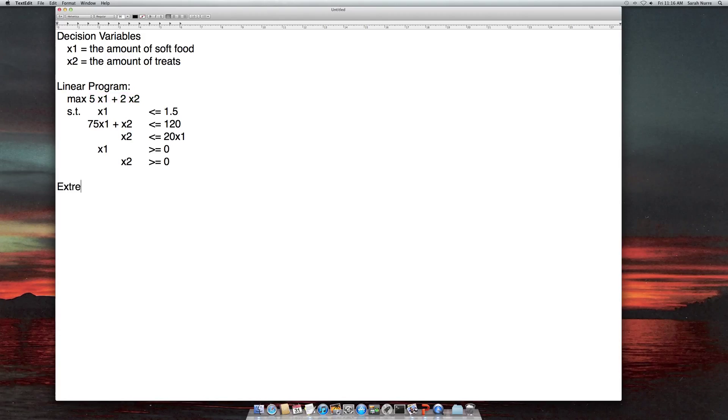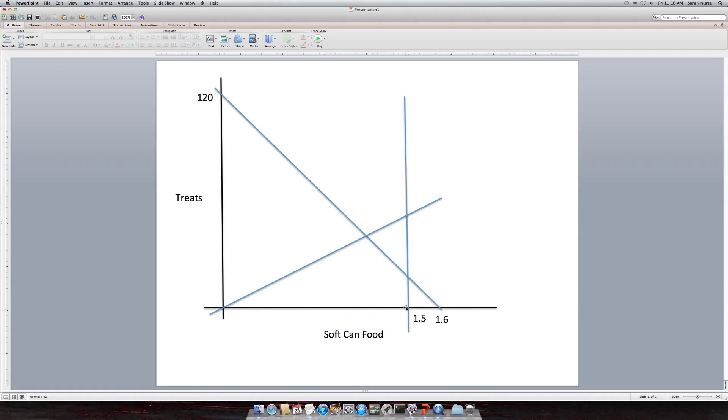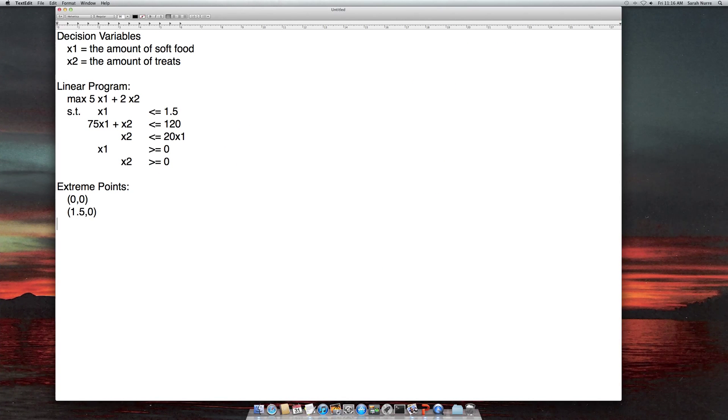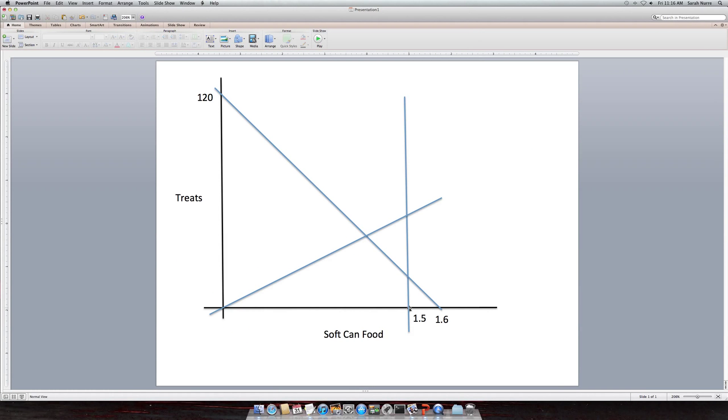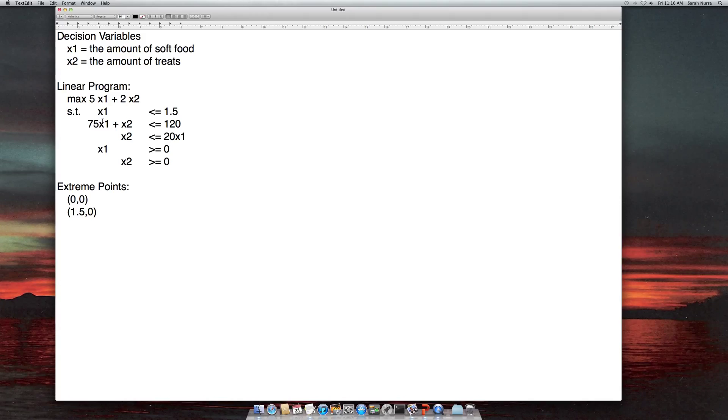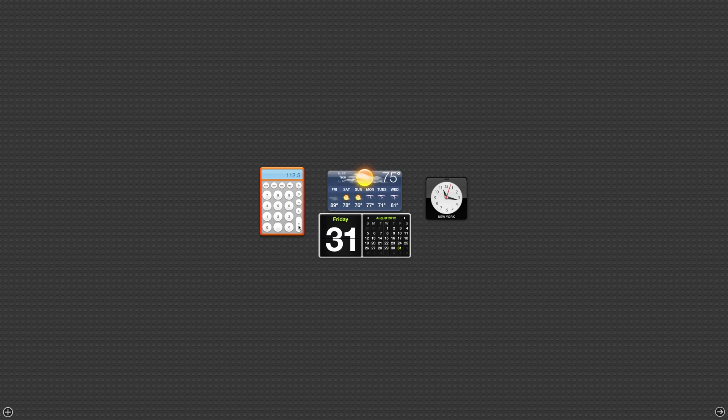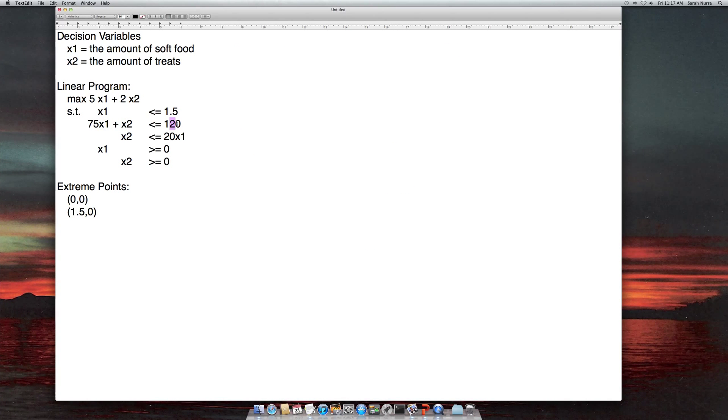So here we know one extreme point is zero zero. So here I'm just going to write these down as zero zero. Our next extreme point going over here is one point five zero. Then we know if we follow this up we're still at 1.5 but we have to see where this 120 which was the amount of calories constraint hits at 1.5. So to do that we're just going to take here if x1 was 1.5 what then is x2. So 75 times 1.5 is, let me take out handy dandy calculator, 75 times 1.5 is 112.5 which leaves 7.5 treats left to hit 120. So that's our third extreme point 1.5, 7.5.